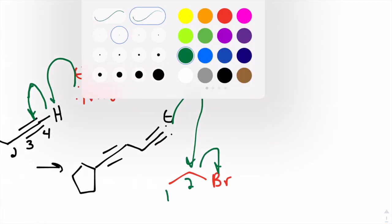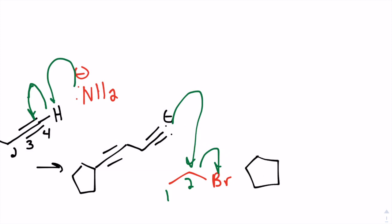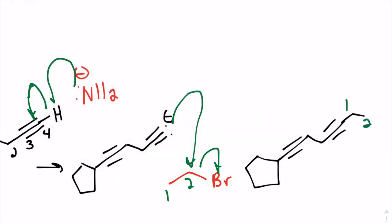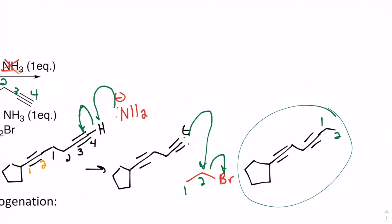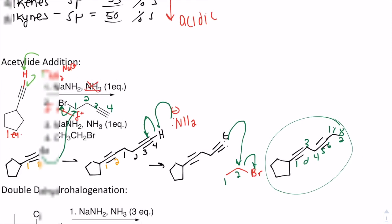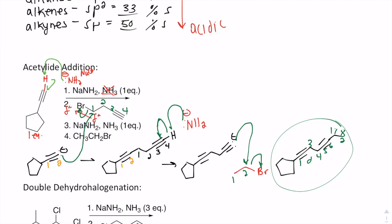The final product is a one-two-three-four-five-six-seven-eight carbon substituent attached to the cyclopentane, whereas in our starting material we only had a two-carbon substituent. This is a great reaction to use in synthesis for extending the carbon chain.